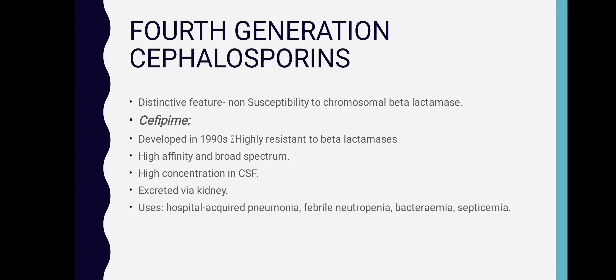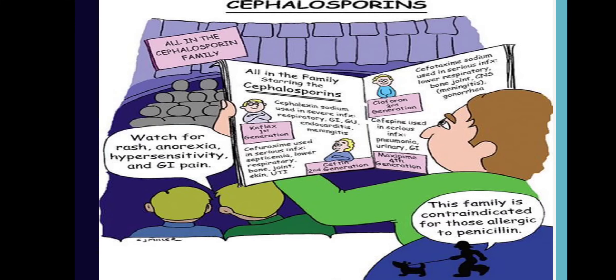The fourth generation cephalosporin has distinctive features of non-susceptibility to chromosomal beta-lactamases. Cefepime was developed in the 1990s and is highly resistant to beta-lactamases, has high affinity and broad spectrum, achieves high concentration in the CSF, is excreted via the kidney, and is used in hospital-acquired pneumonia, febrile neutropenia, bacteremia, and septicemia.